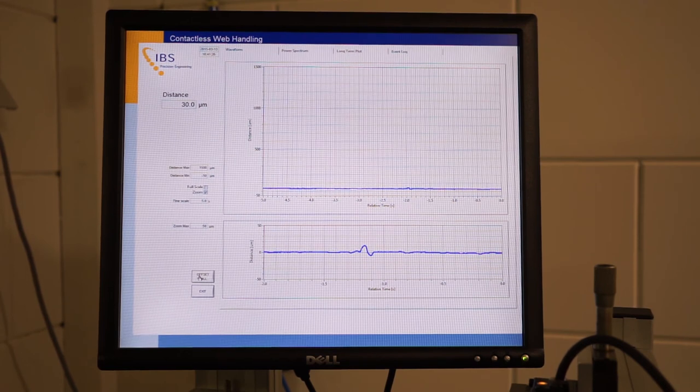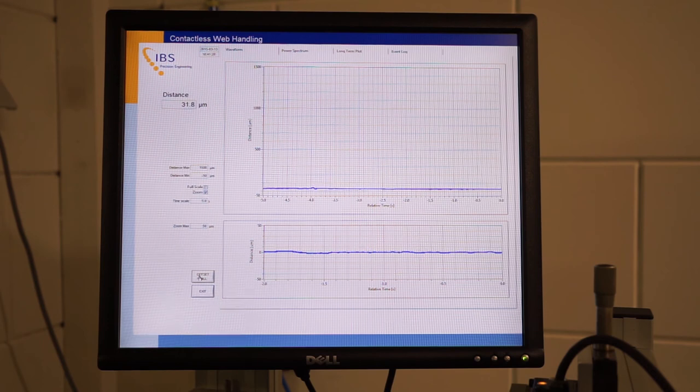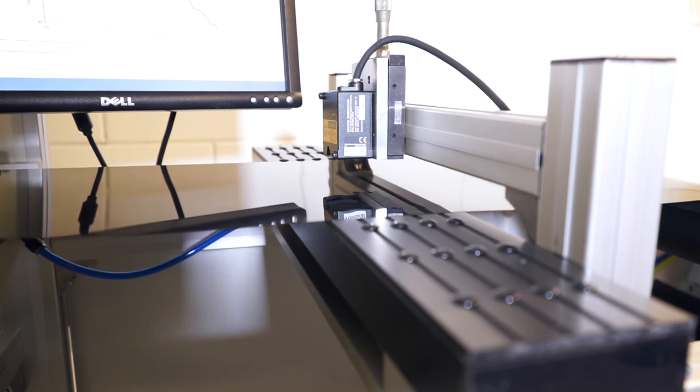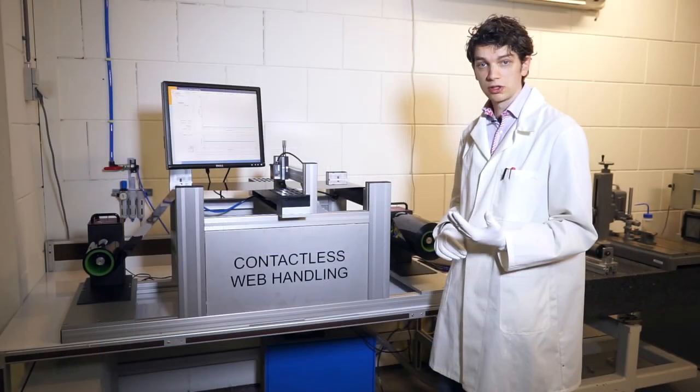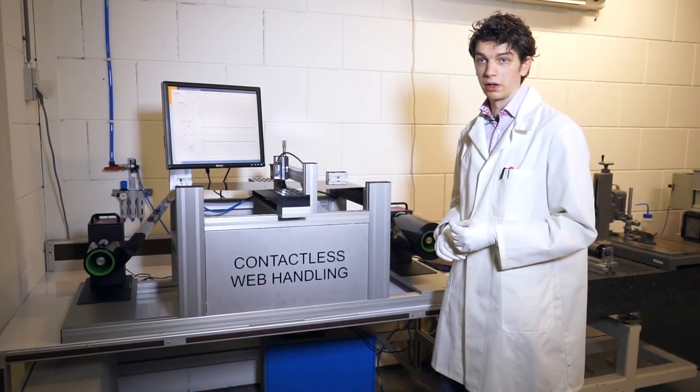Vibrations are reduced to well less than 10 microns typically. By tuning the vacuum pressure, we could also tune the fly height of the film. This really demonstrates the stabilizing function of the air table.